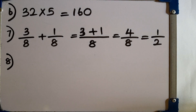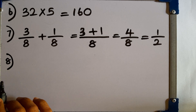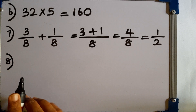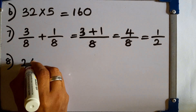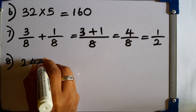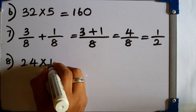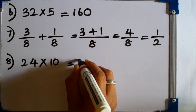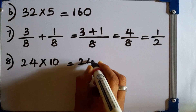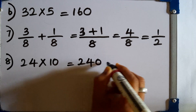Question number 8: express 10 days in hours. We know that 1 day equals 24 hours. So we have to multiply 24 by 10. That is 240 hours.